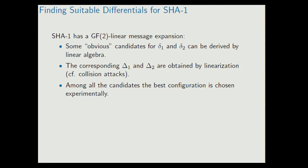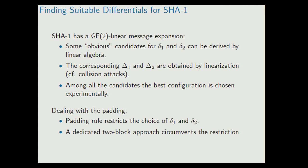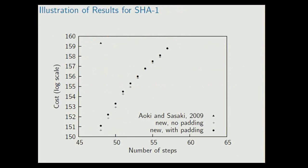There is a small technicality. If you want that your pre-image that you are supposed to find should have correct padding, then this imposes a restriction on the choice of your message differences. And this increases complexity. But for this also, there is a nice idea in the paper. Instead of finding a one-block pre-image, you can use a trick with a two-block pre-image and you can avoid this complication. And as a result, you can find almost at the same cost, you can find a correctly padded two-block pre-image as you can find a one-block pre-image without padding.